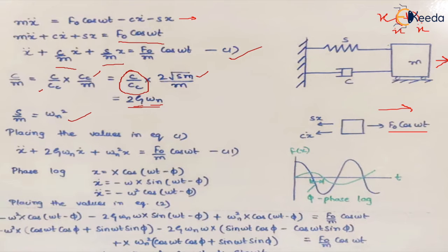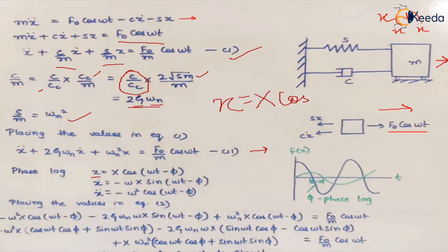Substituting these factors, the equation becomes: ẍ + 2ζω_nẋ + ω_n²x = (F₀/m)cos(ωt). We now solve this equation for displacement. The displacement has the same harmonic function as the force, so x = X·cos(ωt), where X is the amplitude.